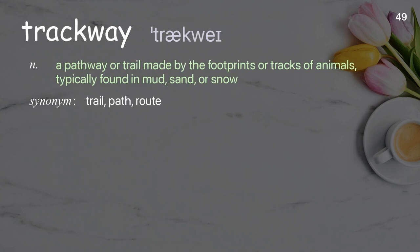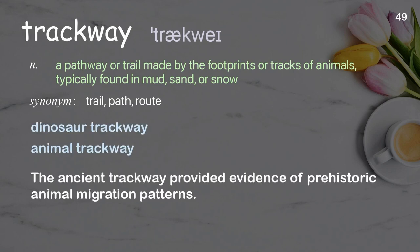Trackway: a pathway or trail made by the footprints or tracks of animals, typically found in mud, sand, or snow. Examples: dinosaur trackway, animal trackway. The ancient trackway provided evidence of prehistoric animal migration patterns.